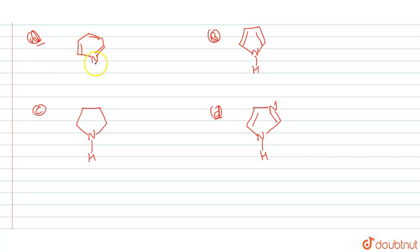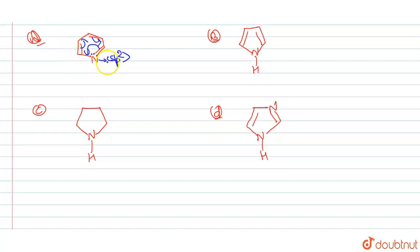In the first case, there is a lone pair on nitrogen, but it is not in resonance. There is only delocalization of the pi bond. This means there is a greater tendency for the nitrogen atom to donate its lone pair. The hybridization of this nitrogen is sp2 because it has two sigma bonds and one lone pair.